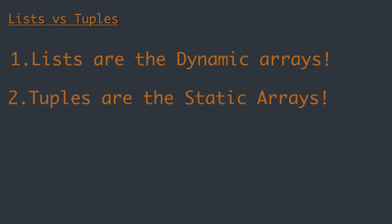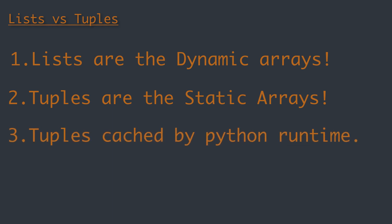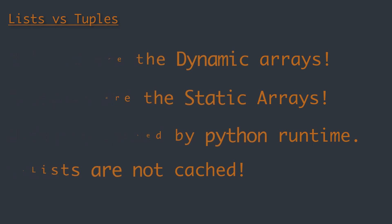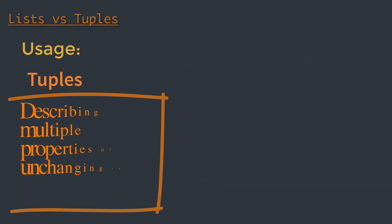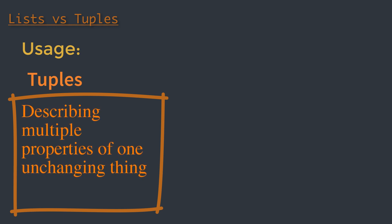Tuples are cached by the Python runtime, which means we don't need to talk to the kernel to reserve memory every time we want to use one, while lists are not cached by the Python runtime due to their dynamic nature. These differences outline the philosophical difference between the two.